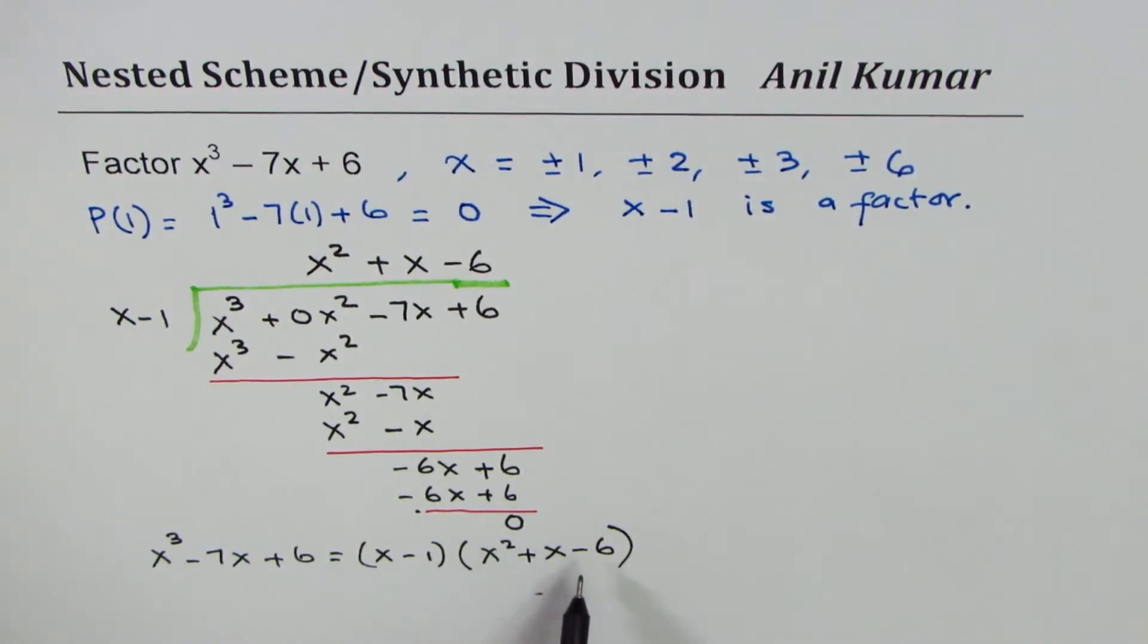Now x square plus x minus 6 is a quadratic equation which could be factored using product and sum. So we're looking for product of minus 6, sum of plus 1. That is 3 and 2: 3 positive, 2 negative.